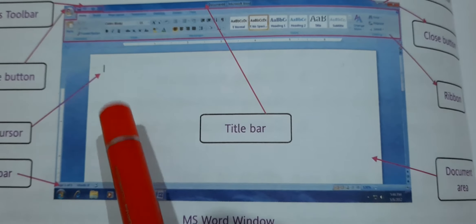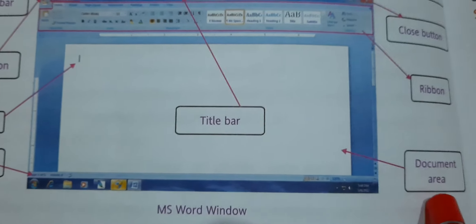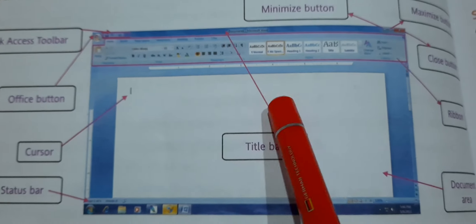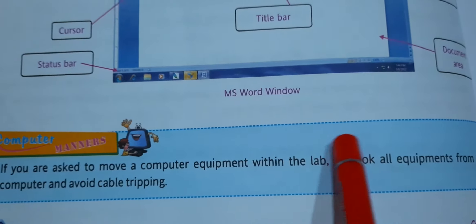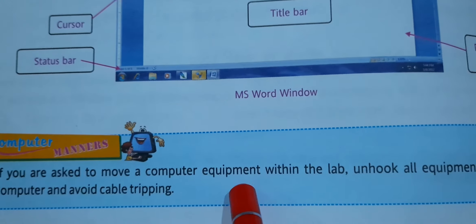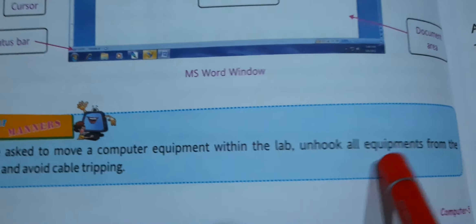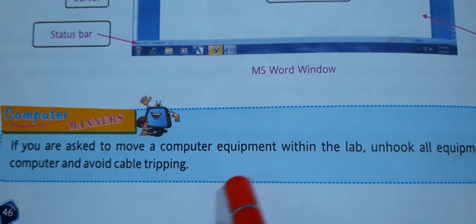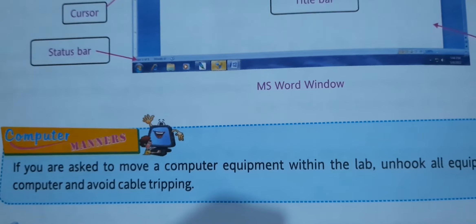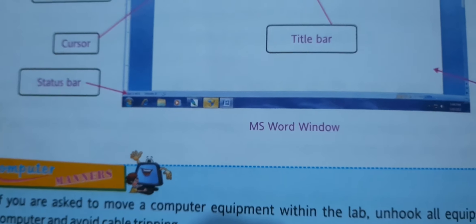In MS Paint it is known as the paint area, but here it is known as the document area. These are the different elements of the MS Word application. Now, regarding computer manner — when you are asked to move computer equipment within the lab or at home, you need to unhook all the equipment from the computer and avoid cable tripping, just like with any other device such as a television or DVD player.